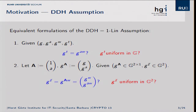The motivation for our framework is the observation — which is not ours and has been explicitly used in several works — that the Diffie-Hellman assumption can alternatively be formulated as a problem of deciding membership in a subgroup of G to the 2. In the standard formulation, we are given a certain tuple and have to decide whether elements have certain relations. In another formulation, we're given matrix A in the exponent, given G and G to the A, and another extra vector Z in Z², and we have to decide whether Z is in the image of A or not. It's quite easy to see that these two formulations are equivalent.